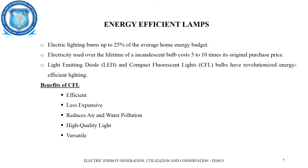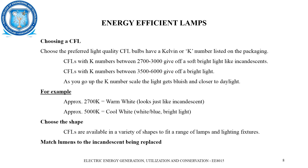The benefits of CFLs are that they are very efficient, offer better output, are less expensive, reduce air and water pollution, are high quality, and are versatile. When choosing a CFL, consider the Kelvin rating: 2700–3000K gives a soft warm light similar to incandescent; 3500–6000K gives a brighter, bluier light closer to daylight. For example, approximately 2700K produces warm light like incandescent, while approximately 5000K emits a cool white or blue-white bright light.